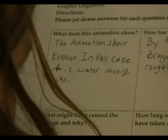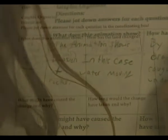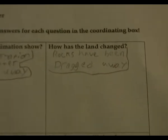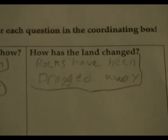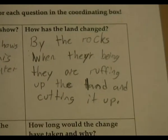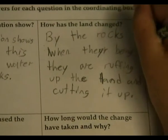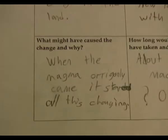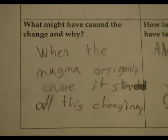Next, you're going to write: how has the land changed? You know these rocks are being dragged away — what's the land going to look like after they're dragged away? And once you get how the land has changed, start working on what might have caused the change and why. Then decide how long this change is going to take.